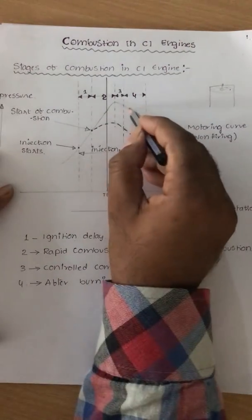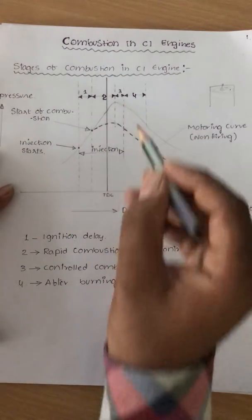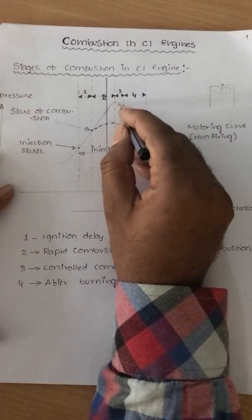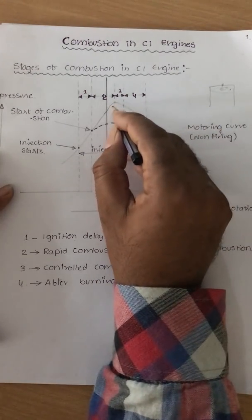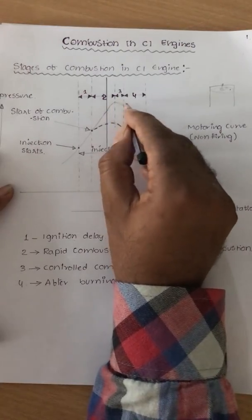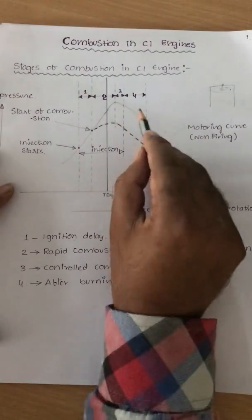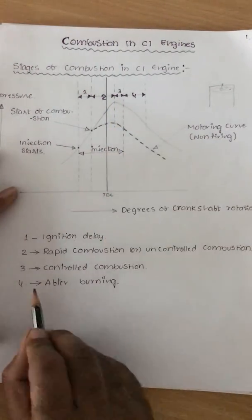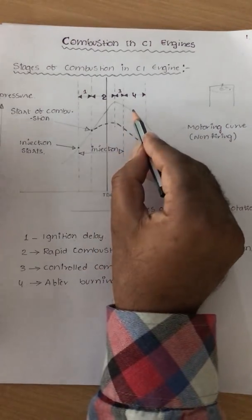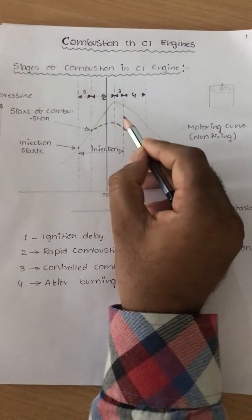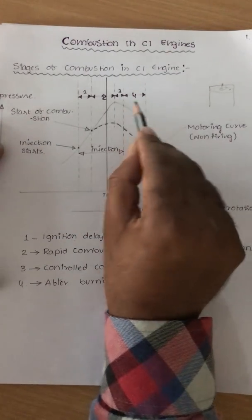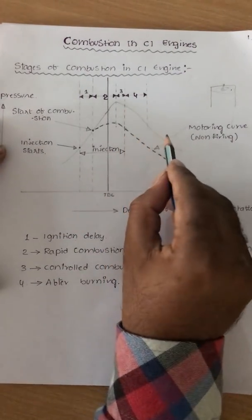The combustion is controlled here because the piston is moving downward and expansion has started. So even after reaching maximum pressure and temperature, even if you supply fuel, it is also under control because expansion has already started. The fourth stage is afterburning — afterburning indicates that fuel has already stopped but because of reassociation and dissociation processes the combustion still continues.